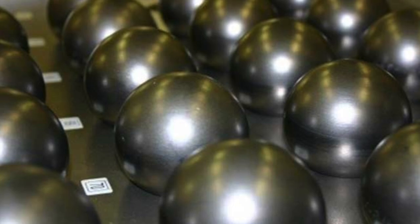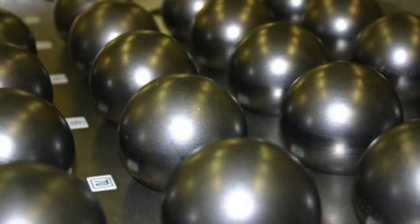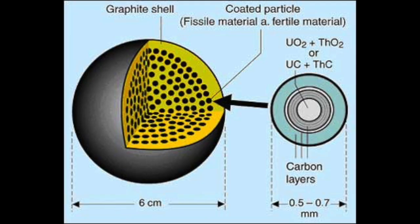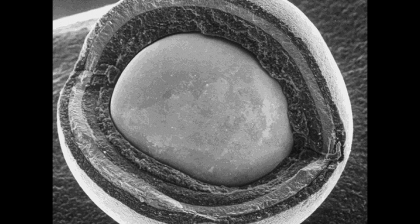consist of 7 cm diameter spheres of pyrolytic graphite, which acts as the neutron moderator. These contain thousands of 1 mm diameter tristructural isotropic or TRISO fuel particles, which are composed of a uranium oxide kernel surrounded by three layers of graphite and silicon dioxide ceramic, which prevent the particles from cracking and fission products from escaping at high temperatures.